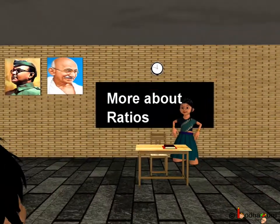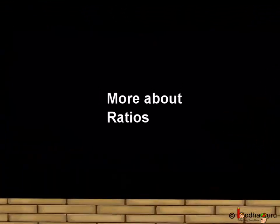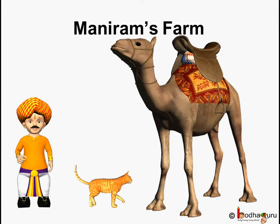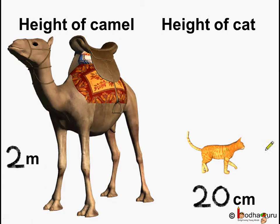Good morning children. Now you know what a ratio is, let's learn more about ratios. Here is another example. This is Maniram, and in his farm he has a camel and a cat. The height of the camel is 2 meters and the height of the cat is 20 centimeters.